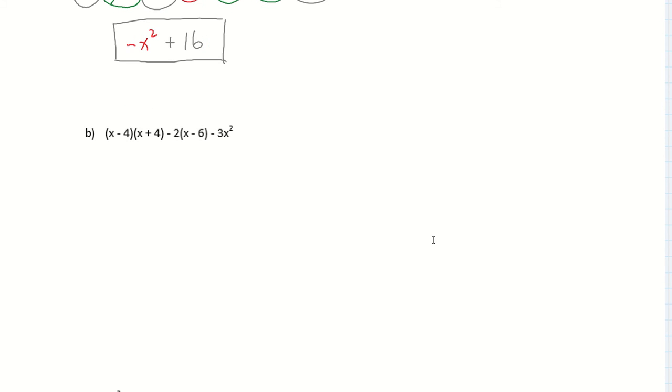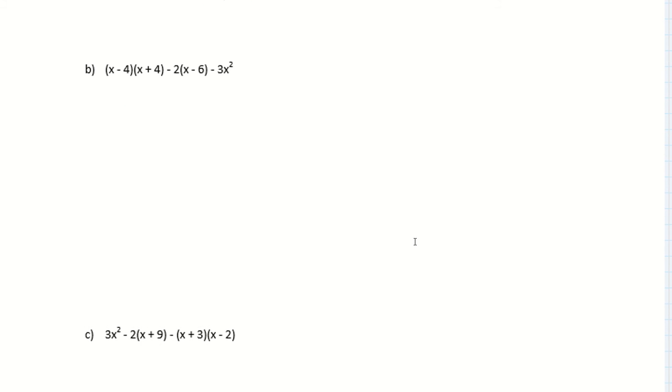In the next example, again, we have a couple of things to expand. We have a foiling, and we've got a distributing. Okay, so let's take care of those. So here, I'll put that in brackets. So x, x times x is x squared.